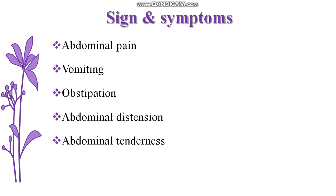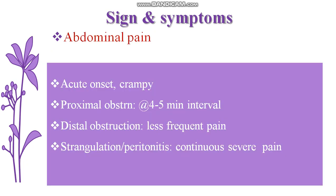So these are the major signs and symptoms: abdominal pain, vomiting, obstipation, abdominal distension, and abdominal tenderness. Regarding abdominal pain, it will be acute in onset. The pain has an interval of 4 to 5 minutes between episodes.